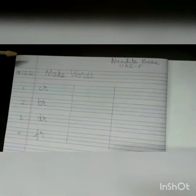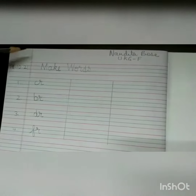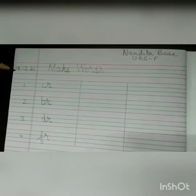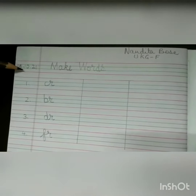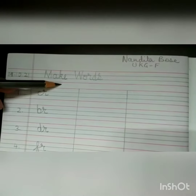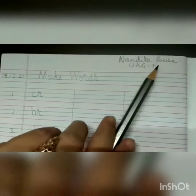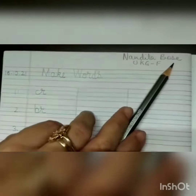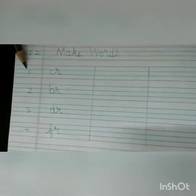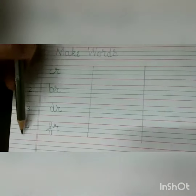Open your English notebook to a fresh page. Begin by writing today's date. Today is the 18th of October 2021. The heading will be 'Make Words'. On the top right corner you will write your name, section and class. And then in the margin write 1, 2, 3, 4.